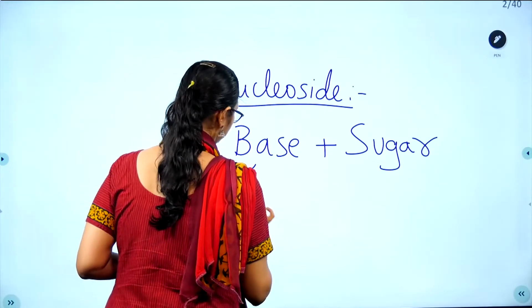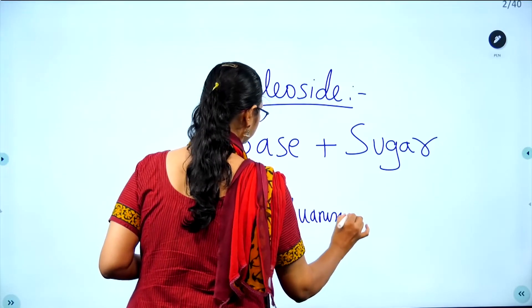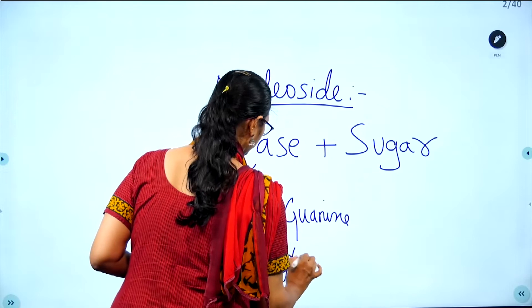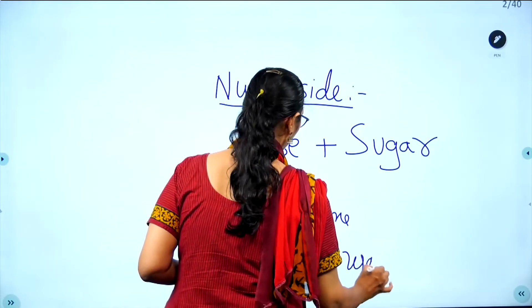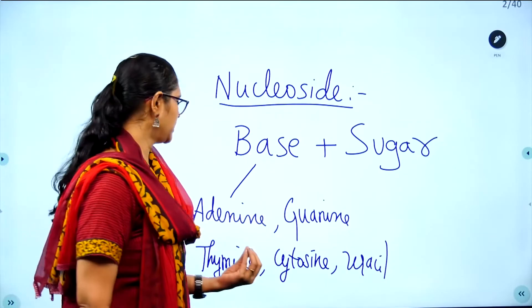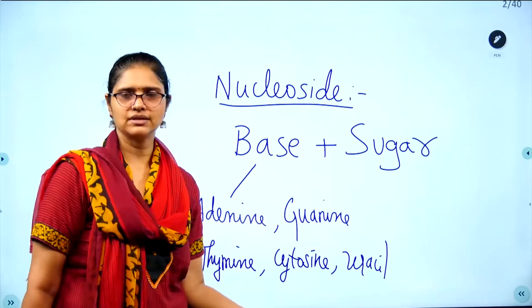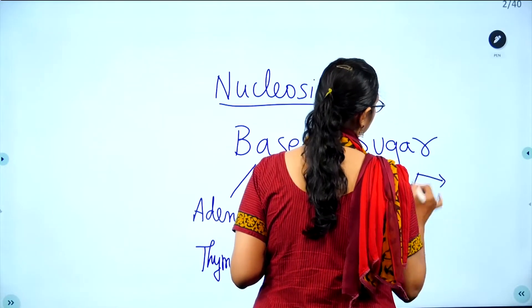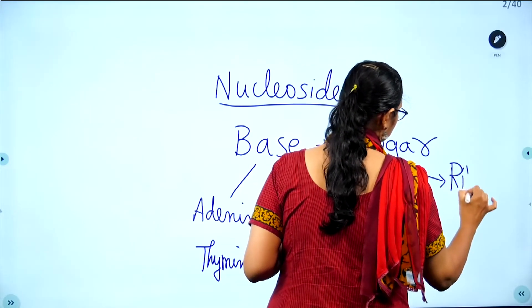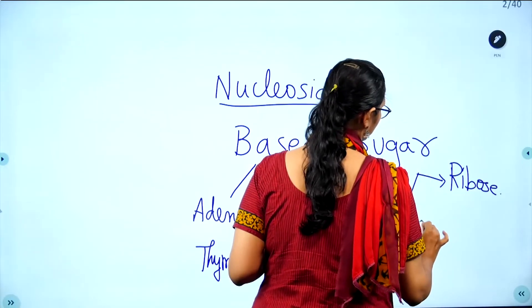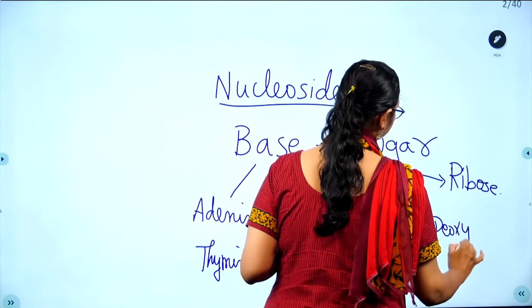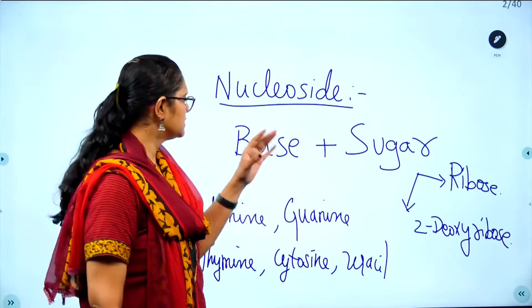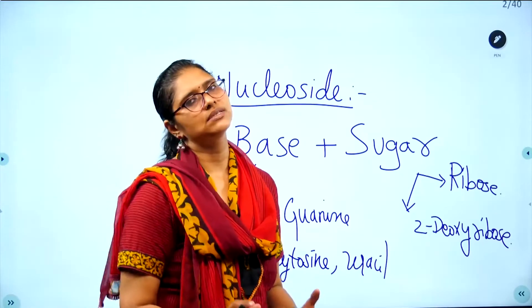The types of bases present are: adenine, guanine, thymine, cytosine, and uracil. The sugar can be of two types: ribose and 2-deoxyribose. Depending on whether it is DNA or RNA, you choose the appropriate sugar molecule. These bases combined with the sugar form the nucleoside.